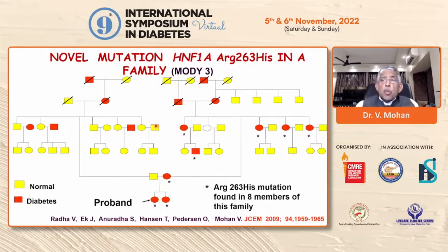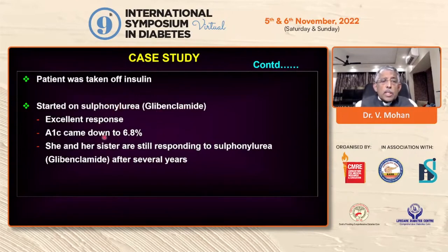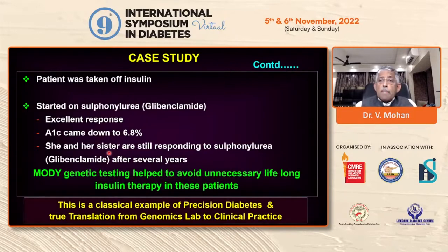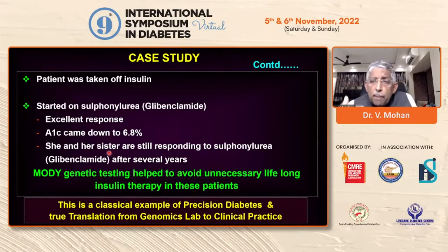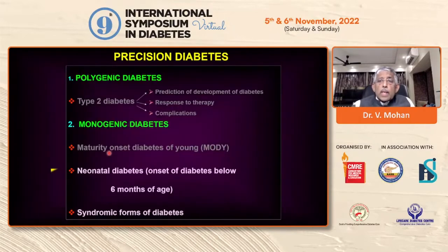We found the HNF1-alpha mutation — MODY 3 — an arginine to histidine mutation, done in our lab. By that time her sister had also developed diabetes and also tested positive for MODY 3, as did her mother, aunts, and a 14-year-old cousin. The beauty of MODY 3 or HNF1-alpha is that they respond to sulfonylureas. We took the patient completely off insulin and started her on glibenclamide; her HbA1c came down to 6.8%, and she's been responding to glibenclamide for several years. She just came back, and 25 years later she's still doing very well — a classical example of precision diabetes.